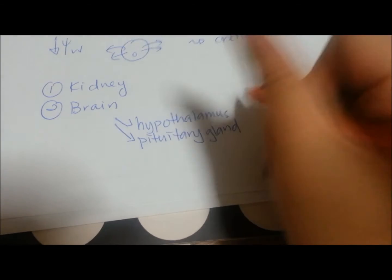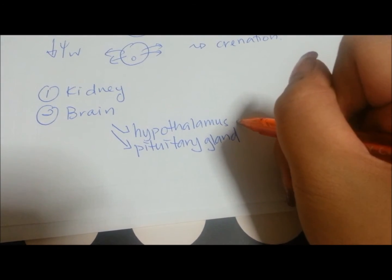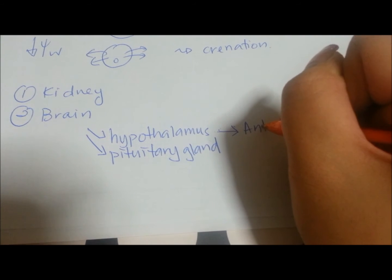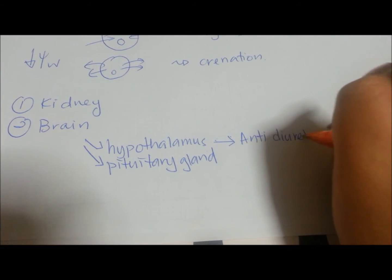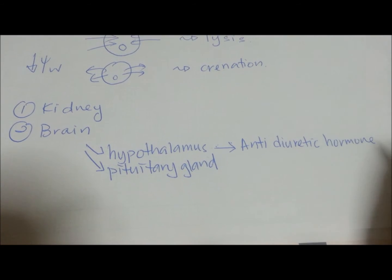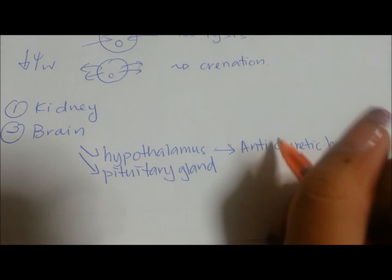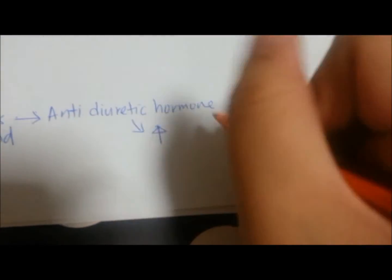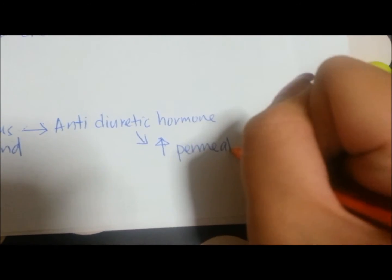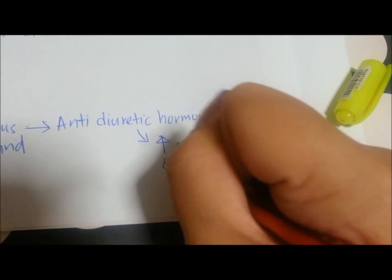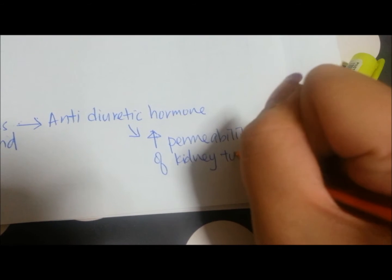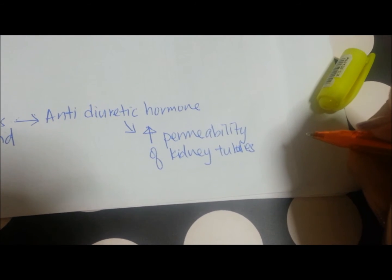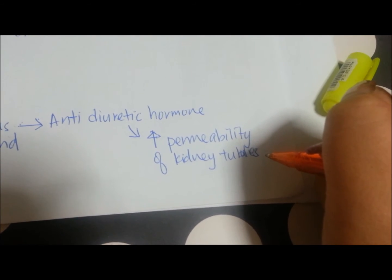How are these two parts involved? They are involved because the hypothalamus produces a hormone — not an enzyme, but a hormone — known as the anti-diuretic hormone, or ADH. This hormone serves to increase the permeability of your kidney tubules, allowing more water to be reabsorbed. The hypothalamus produces ADH, which is stored in the pituitary gland, and when required, the pituitary gland will secrete the ADH.